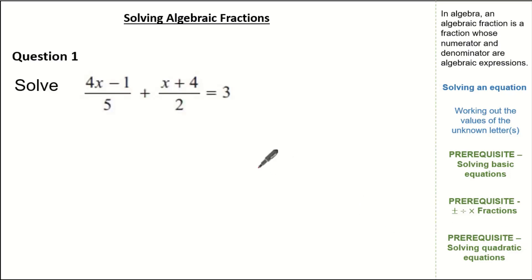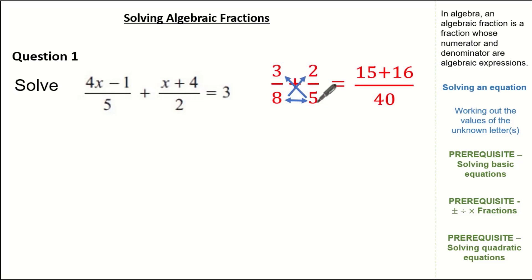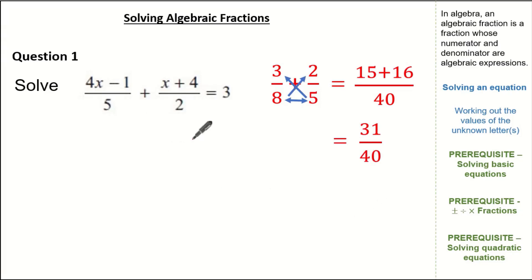Let's look at solving a simple algebraic fraction question where the denominators are integers, using our prerequisite knowledge on addition and subtraction of fractions. Before we look at the main question, let's review a simple addition of fractions: we use the cross multiply method — multiply 5 by 3 to give 15, 8 by 2 to give 16, and 8 by 5 to give 40, which works out to be 31 over 40. We're going to use the same method with this algebraic fraction question.